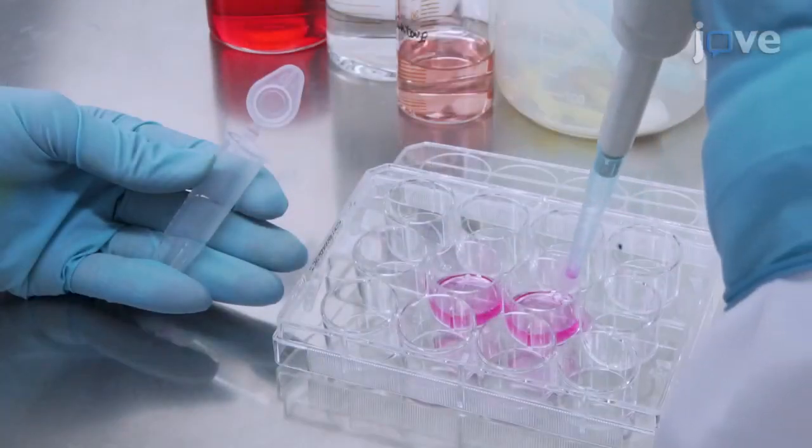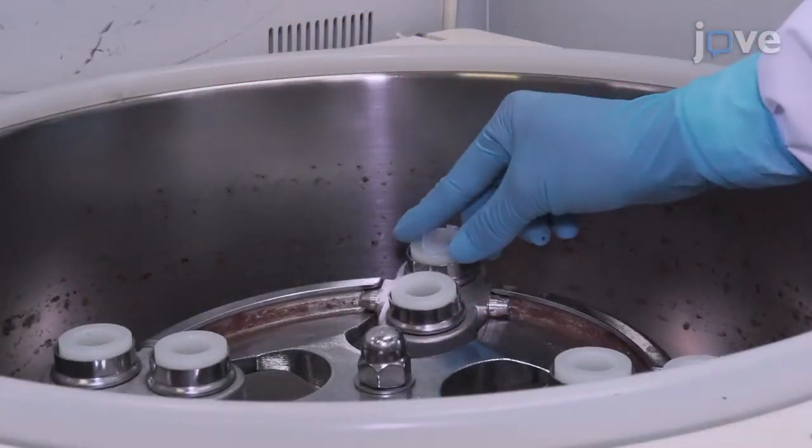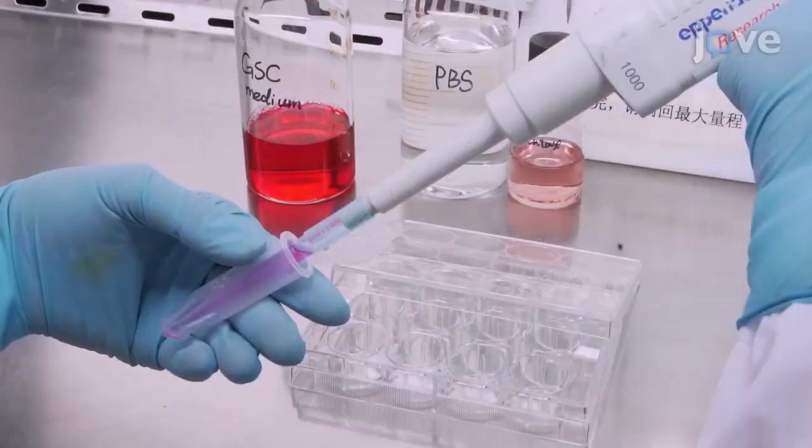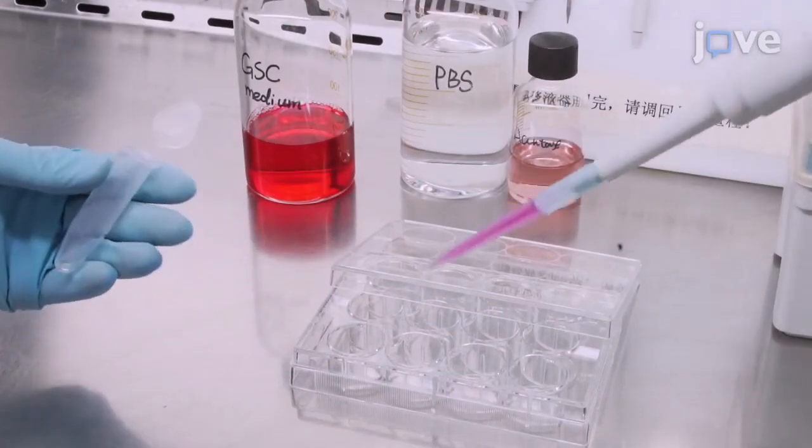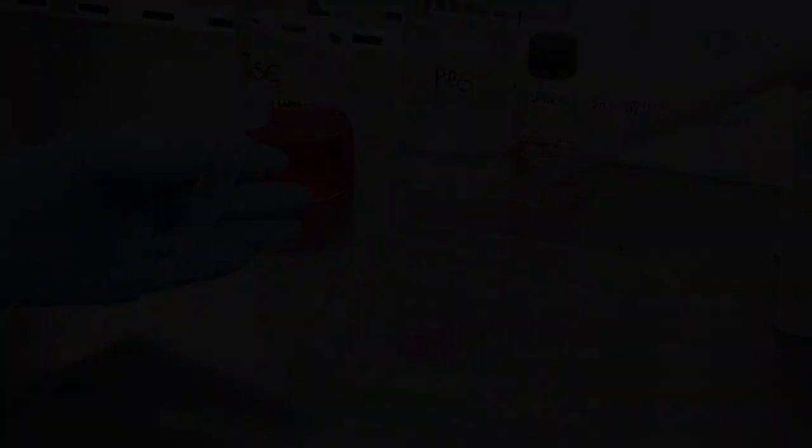On the following day, replace the medium in the wells by collecting the GSCs, centrifuging them, removing the supernatant, re-suspending them in fresh medium, and re-plating them. Culture the cells for another 48 hours.